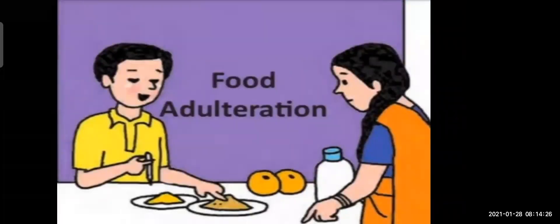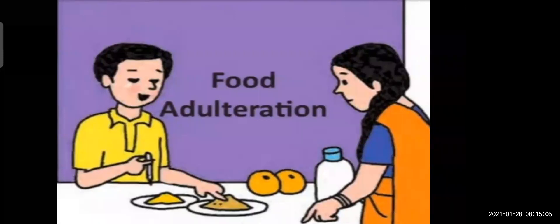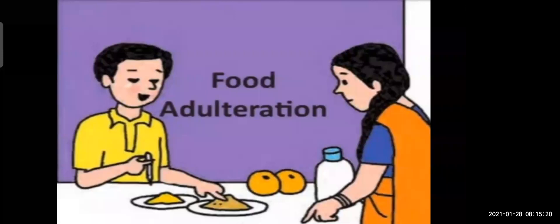The next stall was food adulteration. Parents and visitors learned about food adulteration. In order to earn more profits, cheaper substances of low quality are mixed with food items — these are called adulterants, and adding them to food is called adulteration. For example, in milk, adulterants like water, urea, or starch are added. In chili powder, brick powder is added. In rice, small white stones are added. In peanuts, reddish pebble stones are added. In this way, food becomes adulterated.